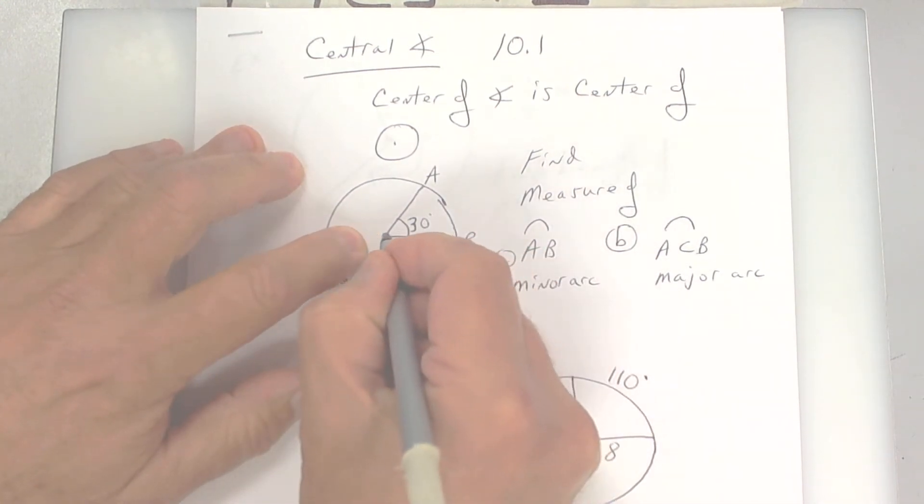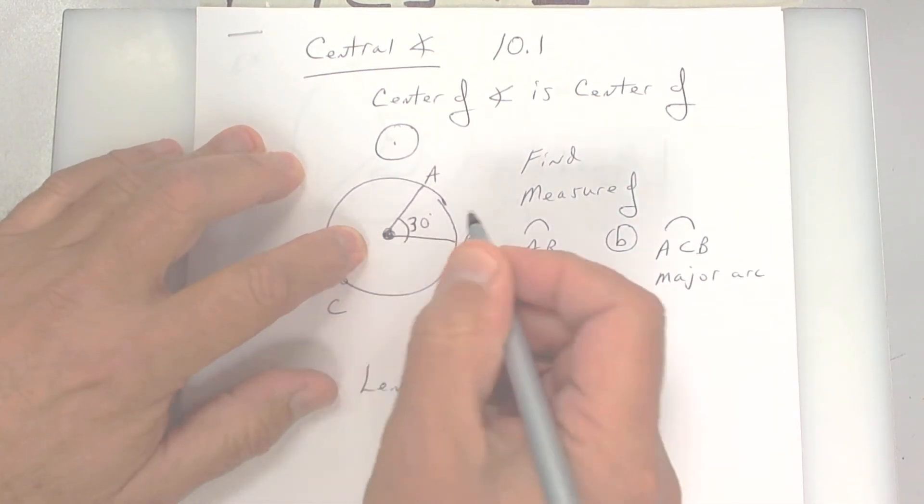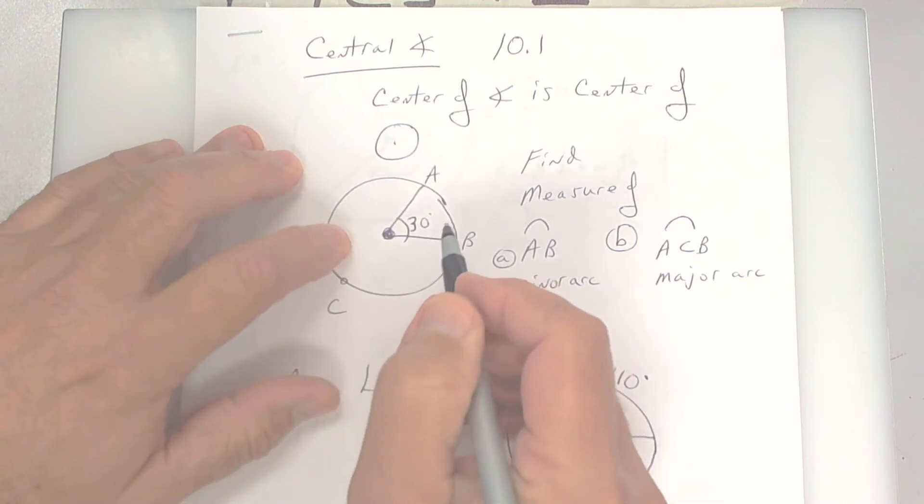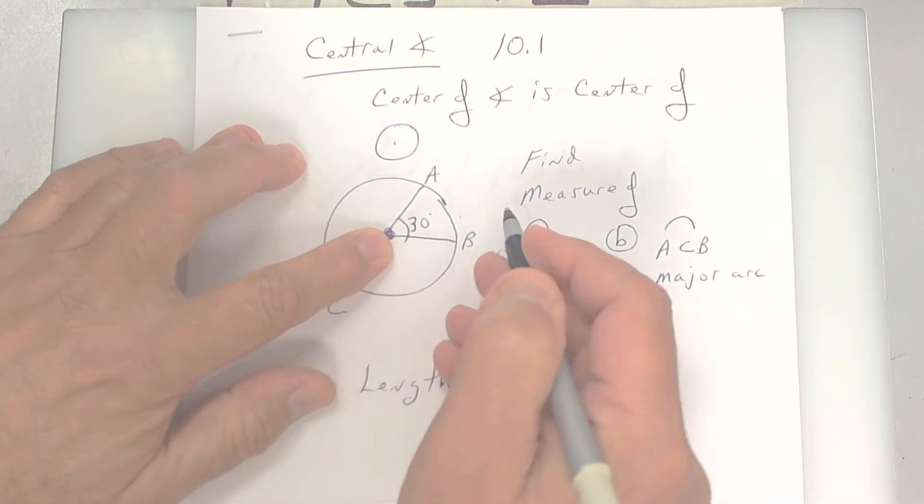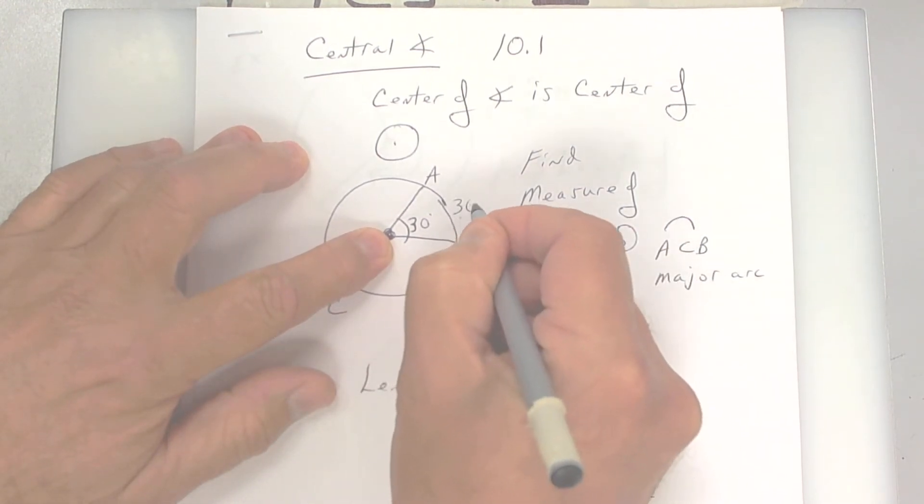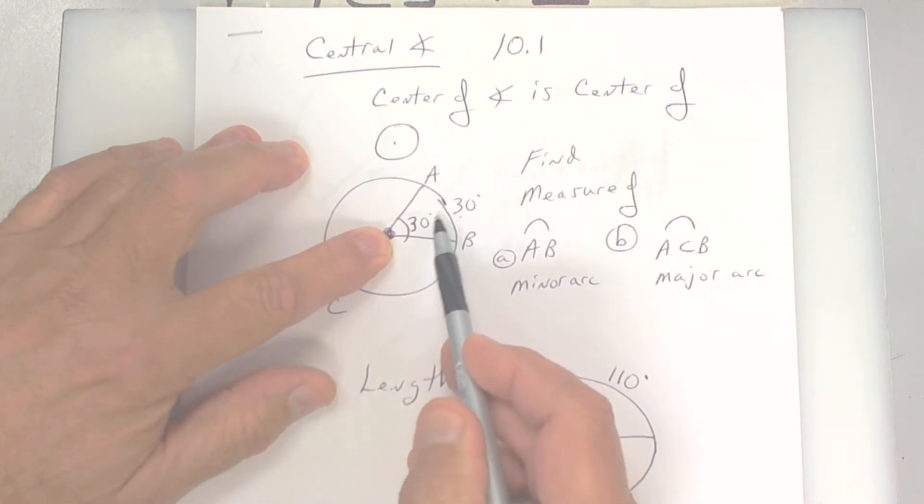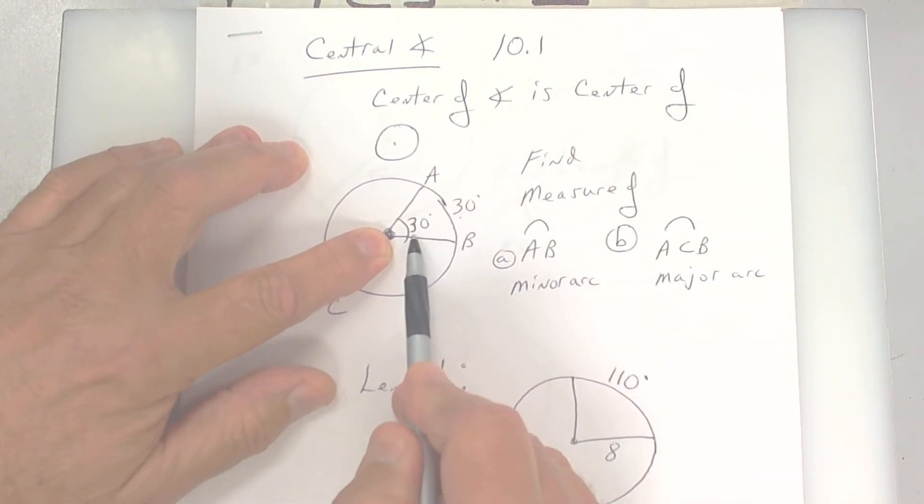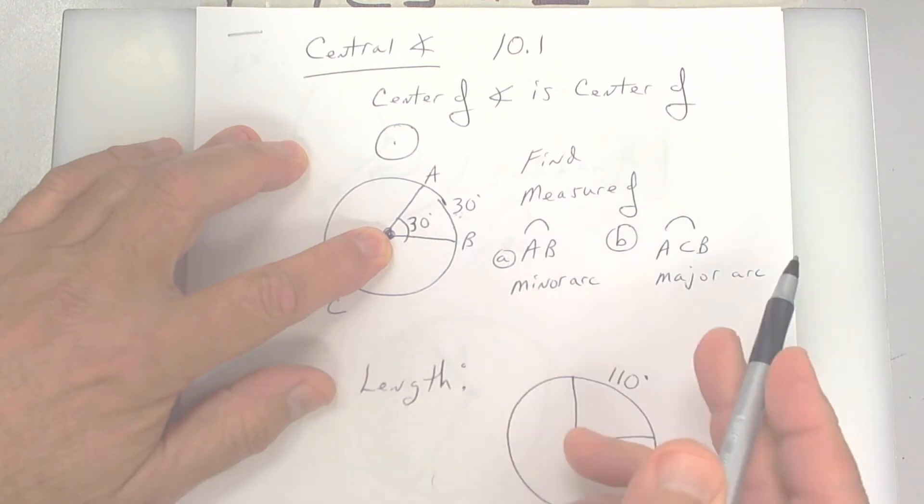A central angle is defined by the center of the angle being the center of the circle. So this angle right here starts in the middle of the circle, and the angle and the arc are the same. Very simple. They're the same. So if this is 30 degrees, this is 30 degrees.